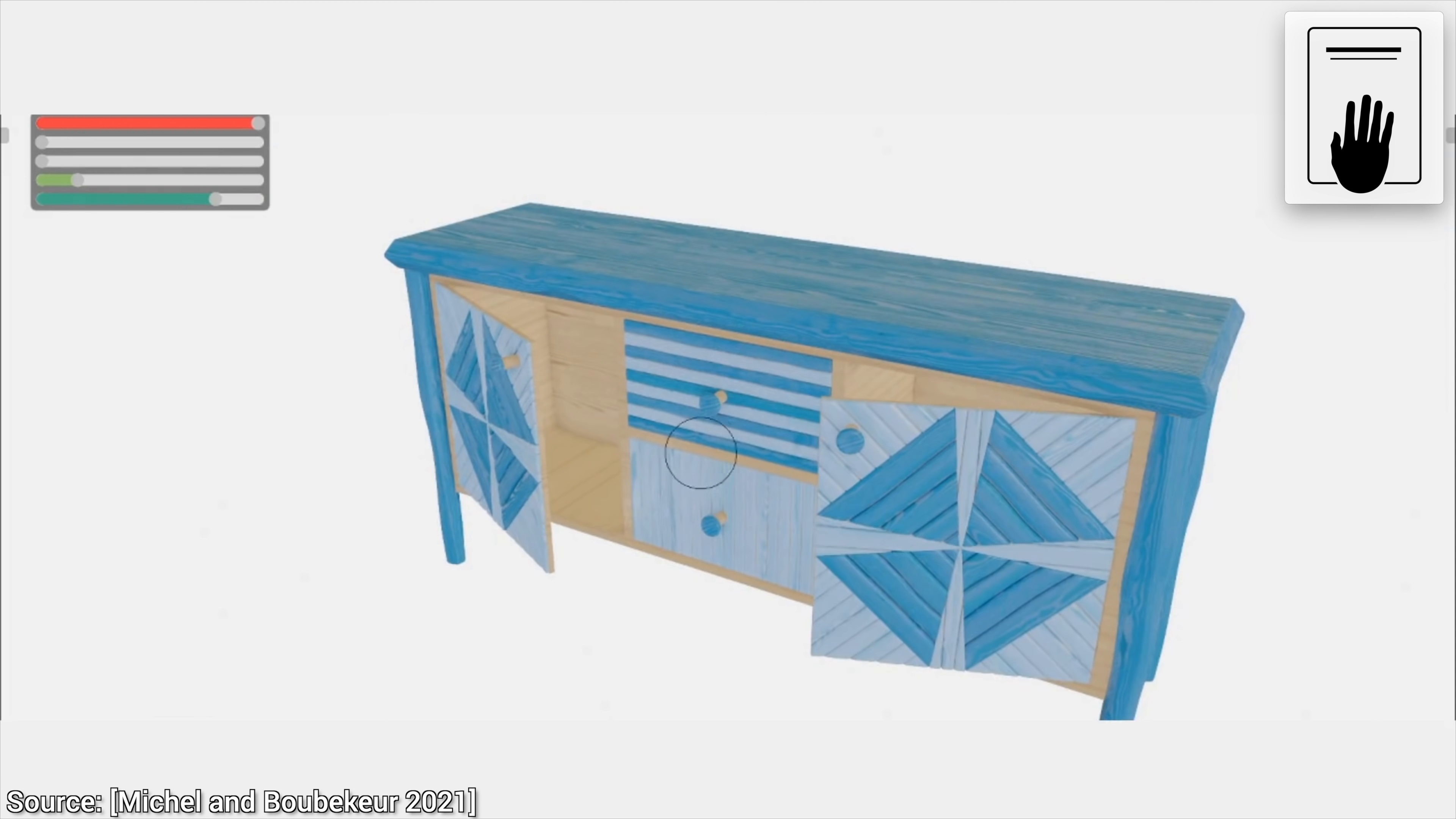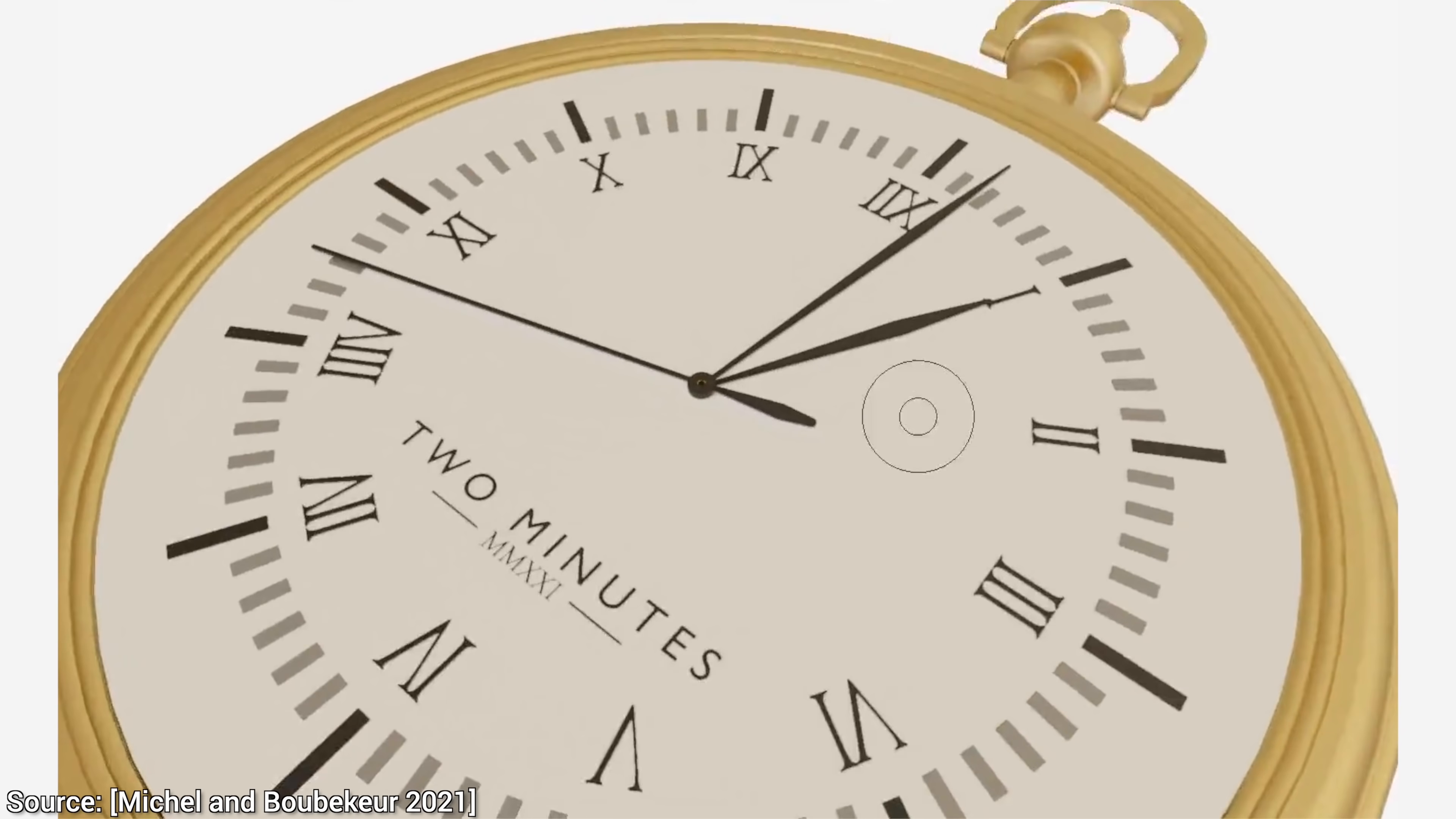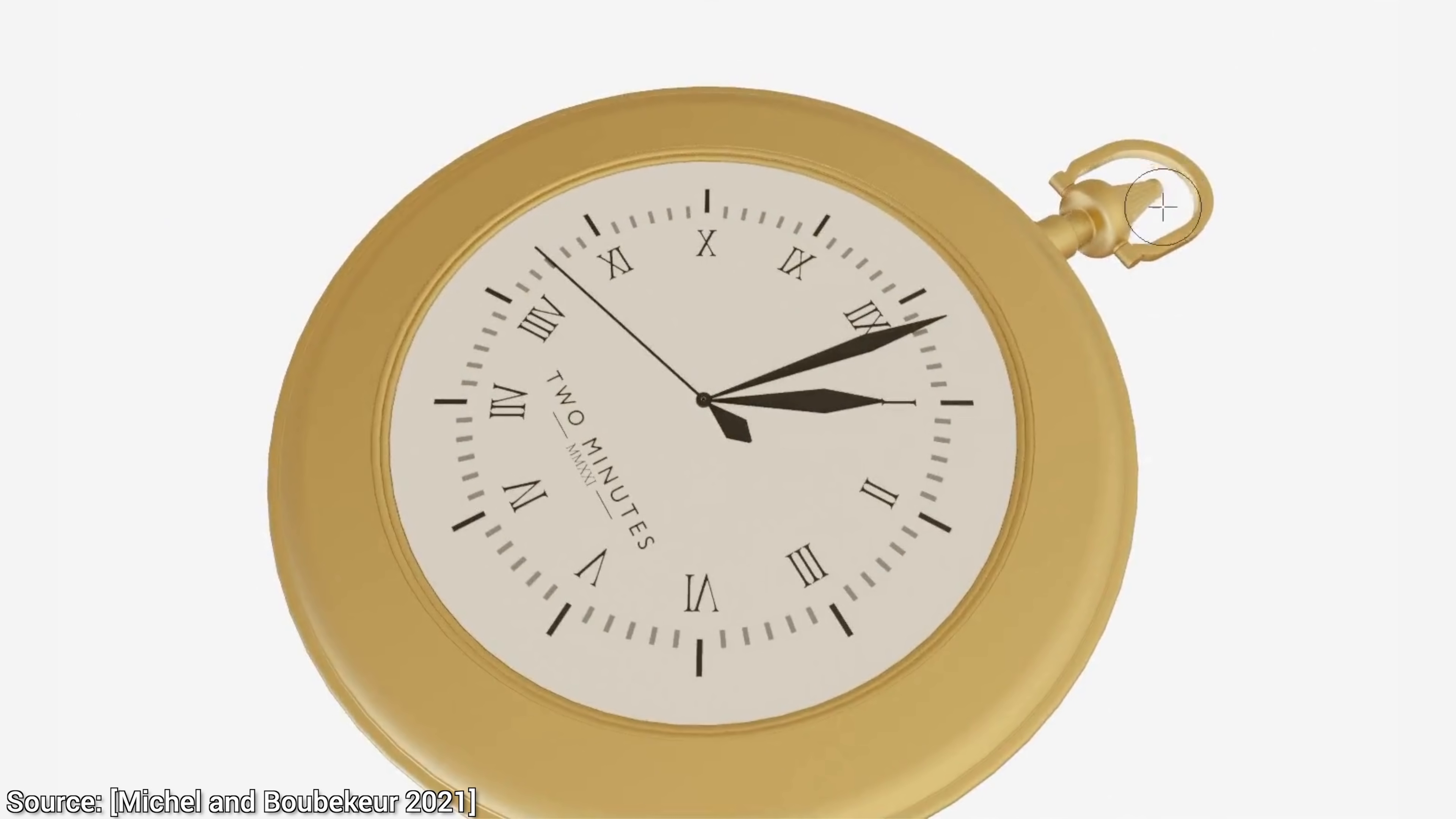And hold on to your papers, because to demonstrate the utility of their technique, the authors also made a scene just for us. Look! Nice! This is no less than a Two Minute Papers branded chronometer. And here, we can change the proportions, the dial, the hands, whatever we wish, and it is so easy and showcases the utility of the method so well.